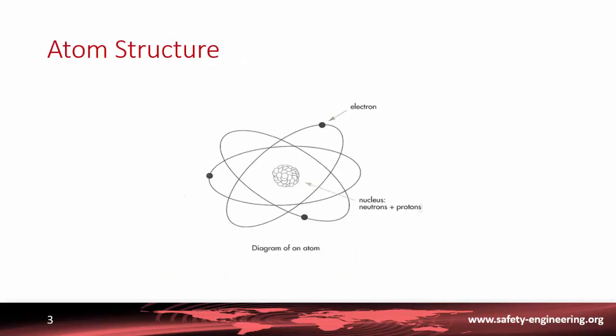So let's begin now with a description of the atom structure. We will use the Bohr atomic model, in which an atom is modeled as a positively charged nucleus with negatively charged electrons surrounding it. The nucleus is composed of neutrons and protons, and this figure provides a schematic representation of an atom.